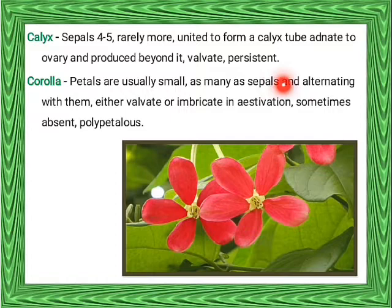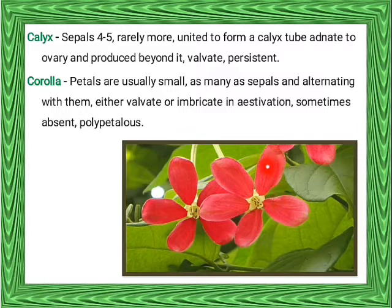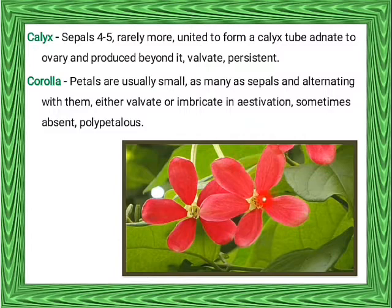The persistent type of calyx means the sepals remain without falling and are found on the fruit. Corolla consists of 4 to 5 petals, usually small, as many as sepals and alternating with them — either valvate or imbricate in aestivation, sometimes absent or polypetalous meaning petals are free. Here we can see the Quisqualis indica flower: five petals in the same line not overlapping, indicating valvate aestivation. The calyx tube is adnate to the ovary.